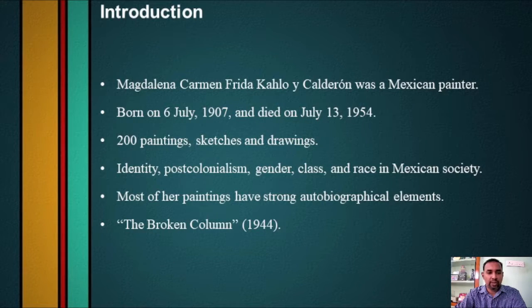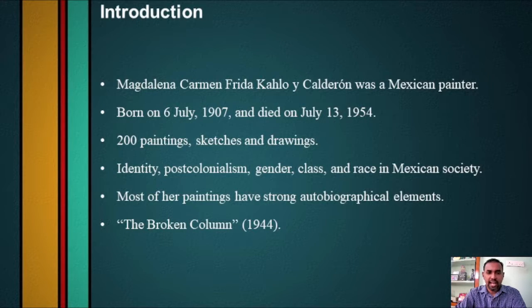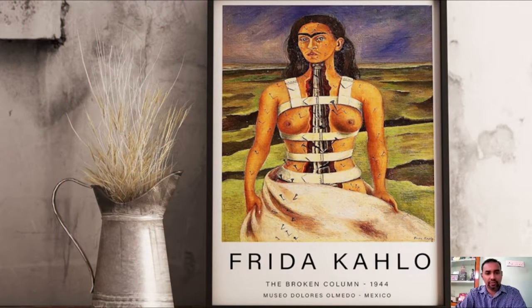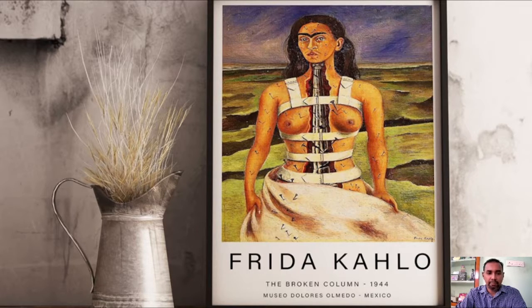She experienced a near-death event in a bus accident that occurred on September 17th 1925. She suffered multiple fractures of her spine, collarbone and ribs, a shattered pelvis, broken foot and a dislocated shoulder. It is during the recovery period following this accident that she started focusing on painting. The devastation to her body was represented in The Broken Column, made in 1944. It is an oil on masonite painting — masonite being a type of fibreboard — in which Kahlo is depicted nearly naked, split down the middle with her spine presented as a broken decorative column. Her skin is dotted with nails and she is also fitted with a surgical brace.